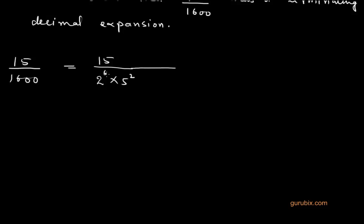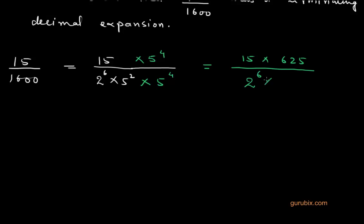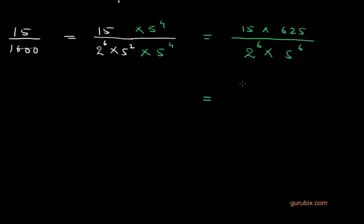Now we shall make the powers of 2 and 5 equal by multiplying both numerator and denominator by 5 to the power 4. We get that 15 multiplied by 5 to the power 4 equals 625, and we can write the denominator as 2 to the power 6 multiplied by 5 to the power 6. Multiplying 15 and 625 gives 9375, and expanding the denominator we get 1 followed by six zeros.